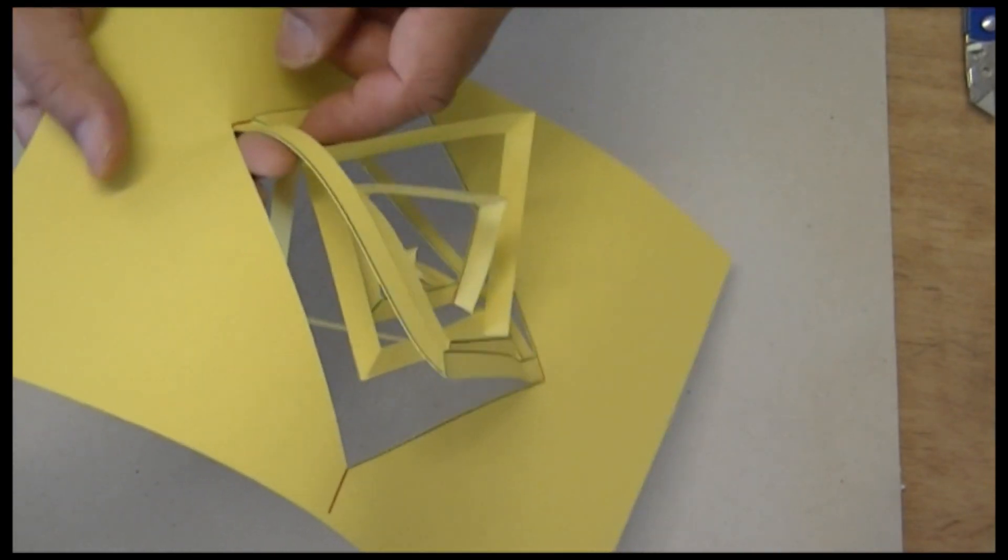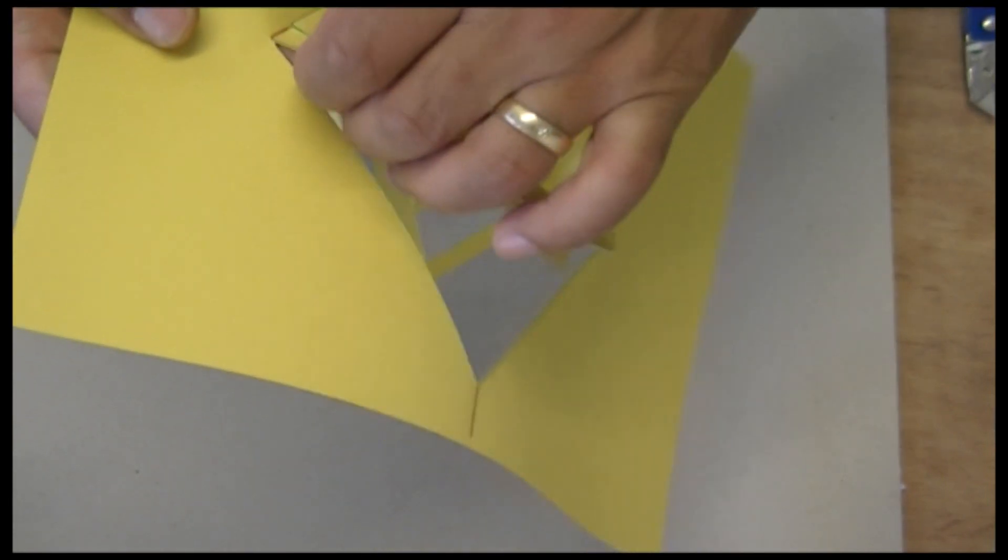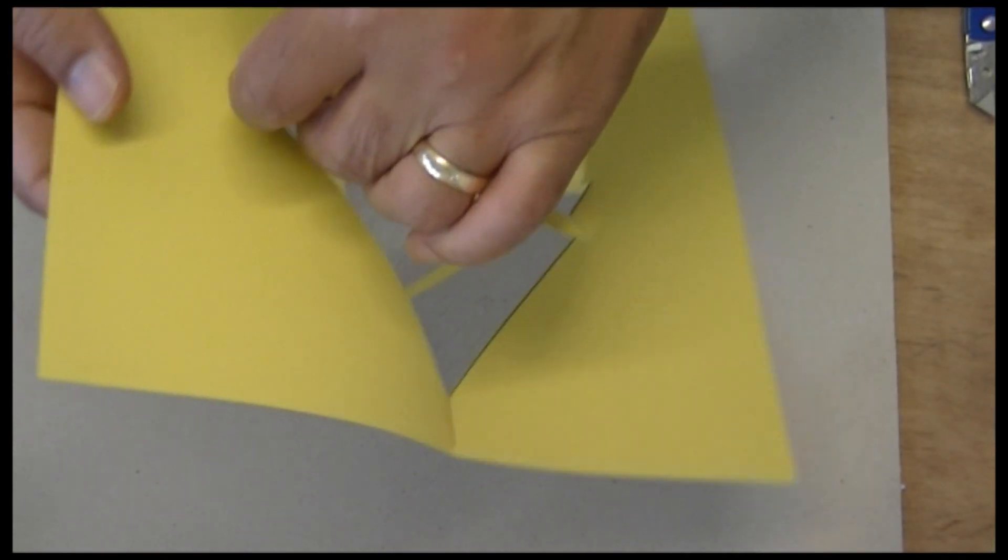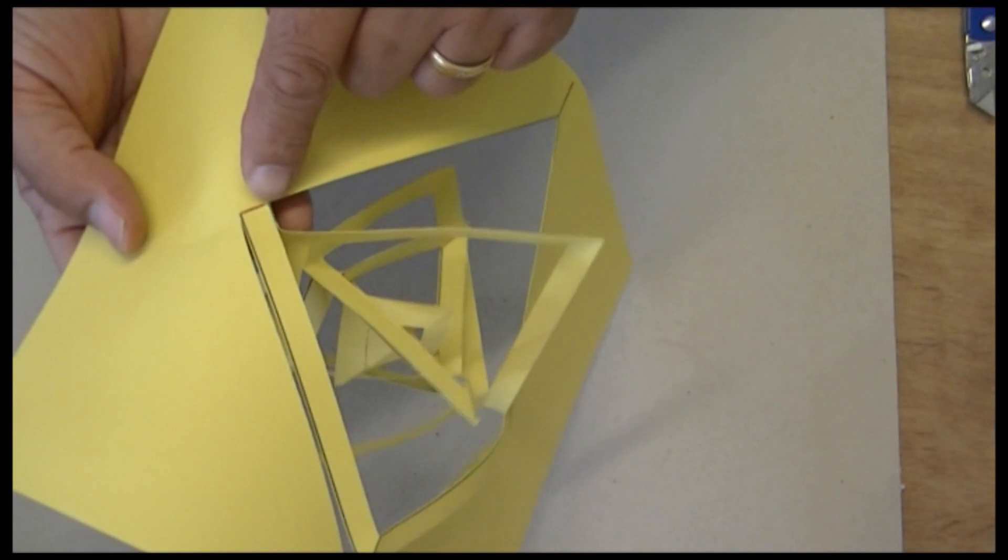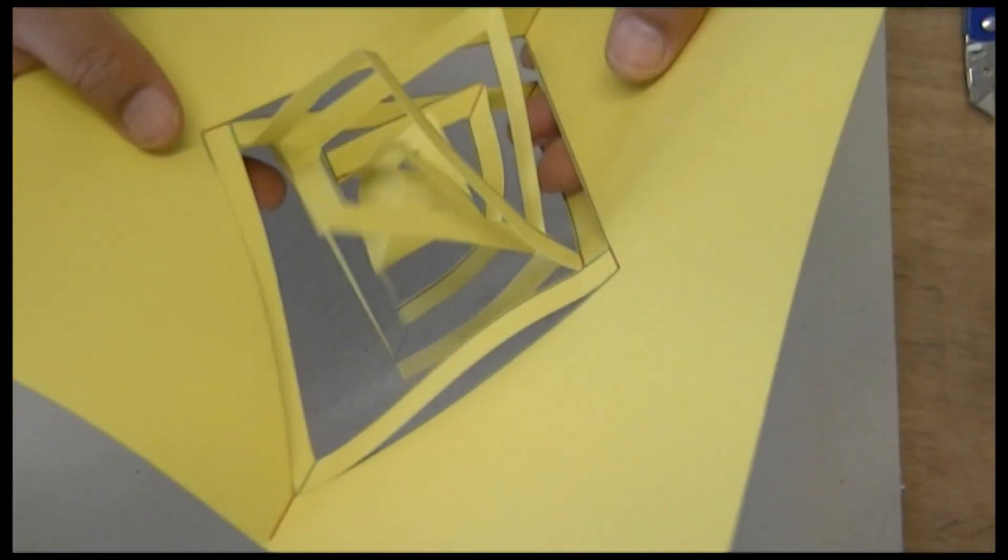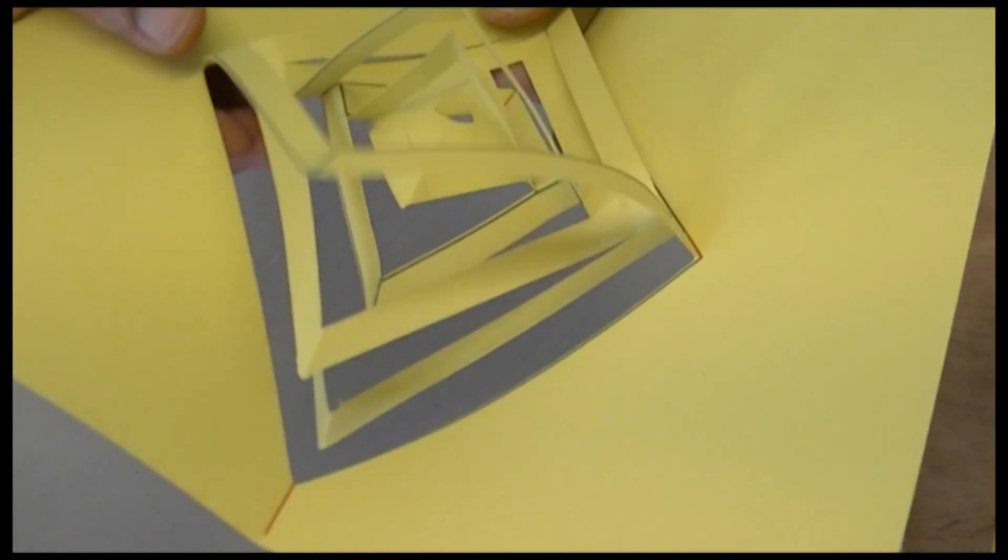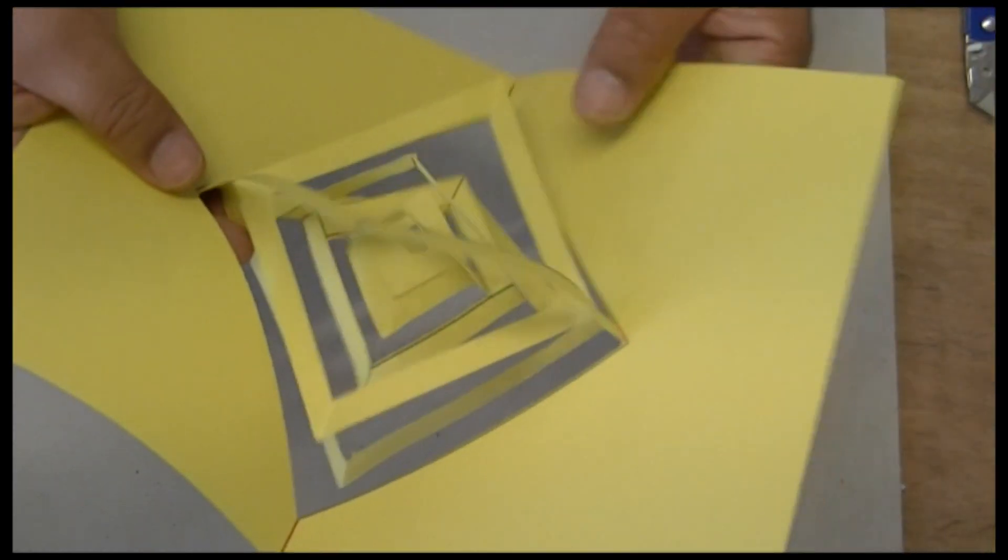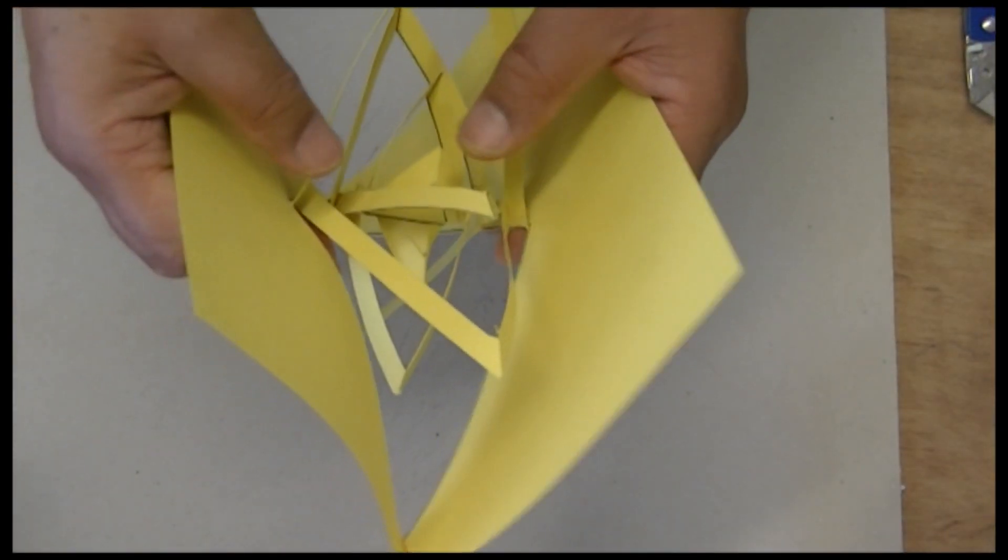So that's your valley fold. That's your mountain fold. That's your mountain fold. That mountain fold stays like that. And then your valley fold, mountain fold. And you just twist it around like this.